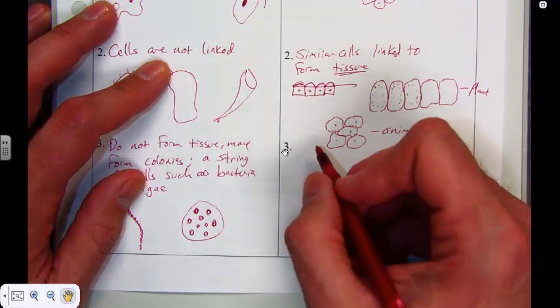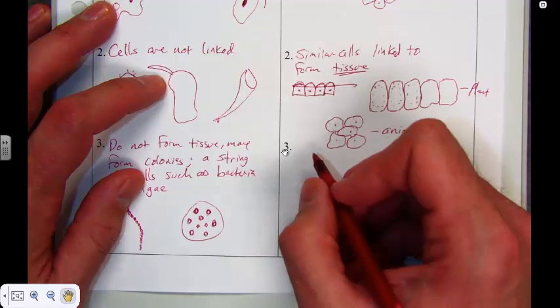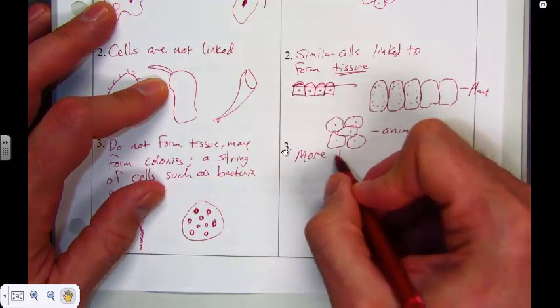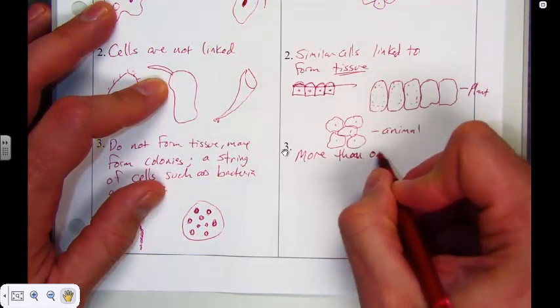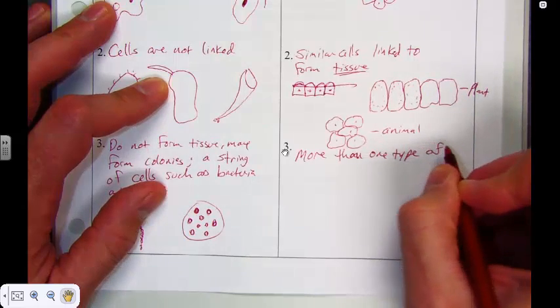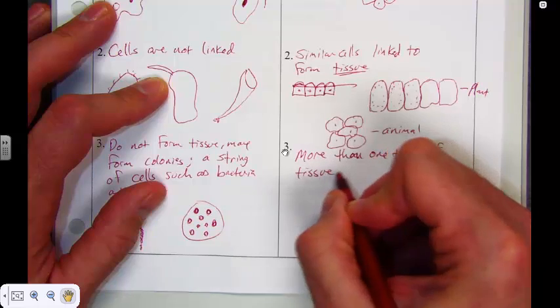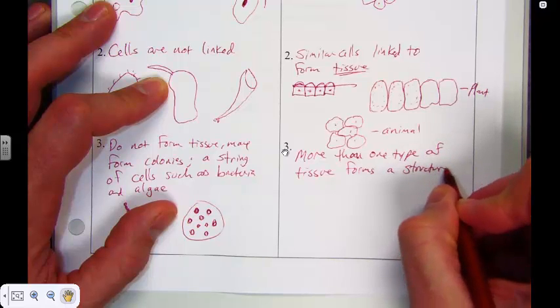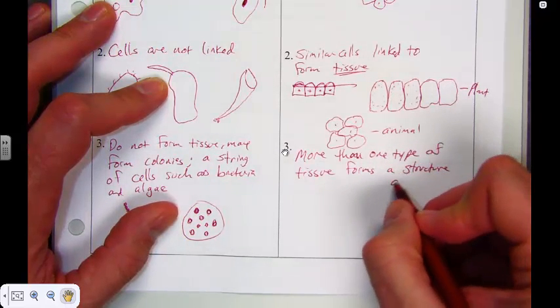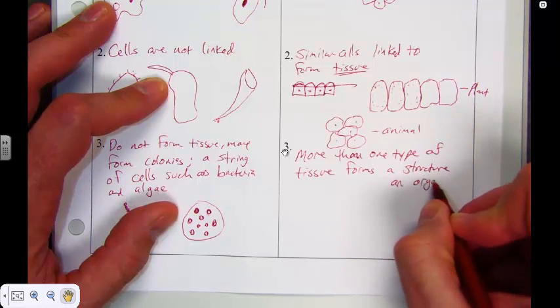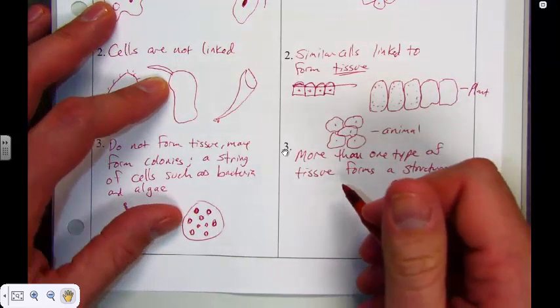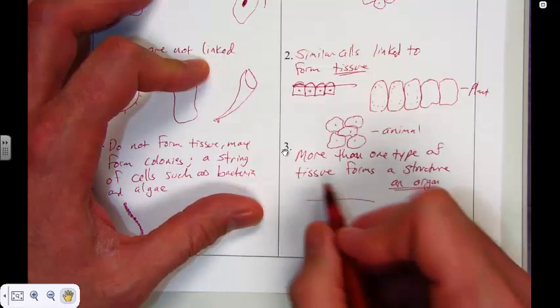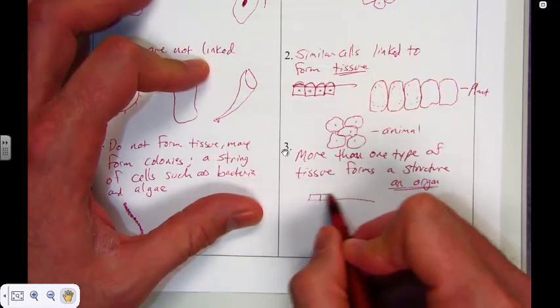By contrast to that, for a multicellular organism, more than one type of tissue forms a structure. Okay, so we have more than one type of tissue forms a structure. And we call this an organ. You could probably think of different organs in the body of a human. Now within plants, we're going to draw the cross section of a leaf. And the leaf is going to be made up of a top part.